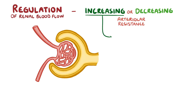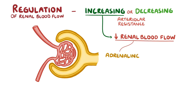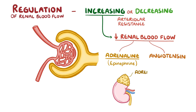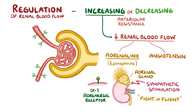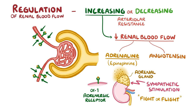There are two key hormones that increase arteriolar resistance and reduce renal blood flow: adrenaline and angiotensin. Adrenaline, also known as epinephrine, is a hormone secreted by the adrenal gland in response to sympathetic stimulation, producing a fight-or-flight response by binding to adrenergic receptors. Adrenaline binds to alpha-1 adrenergic receptors along the afferent and efferent arterioles, causing smooth muscle cells to contract and both arterioles to quickly constrict. The increased arterial resistance leads to low renal blood flow — so when you're being chased by a kangaroo, blood flow is diverted away from the kidneys toward muscles.